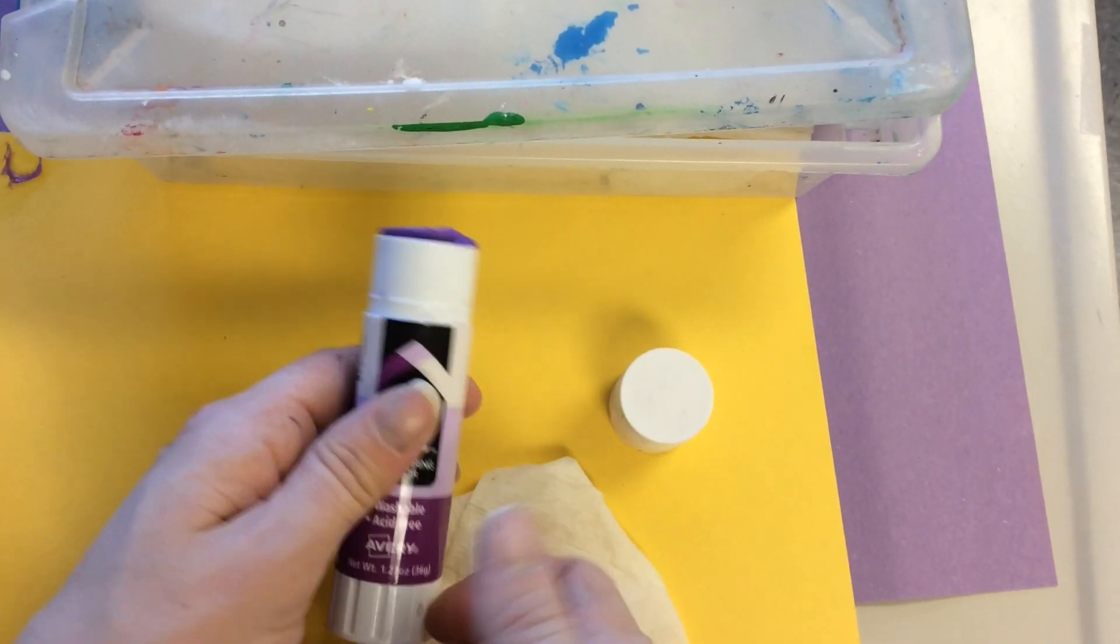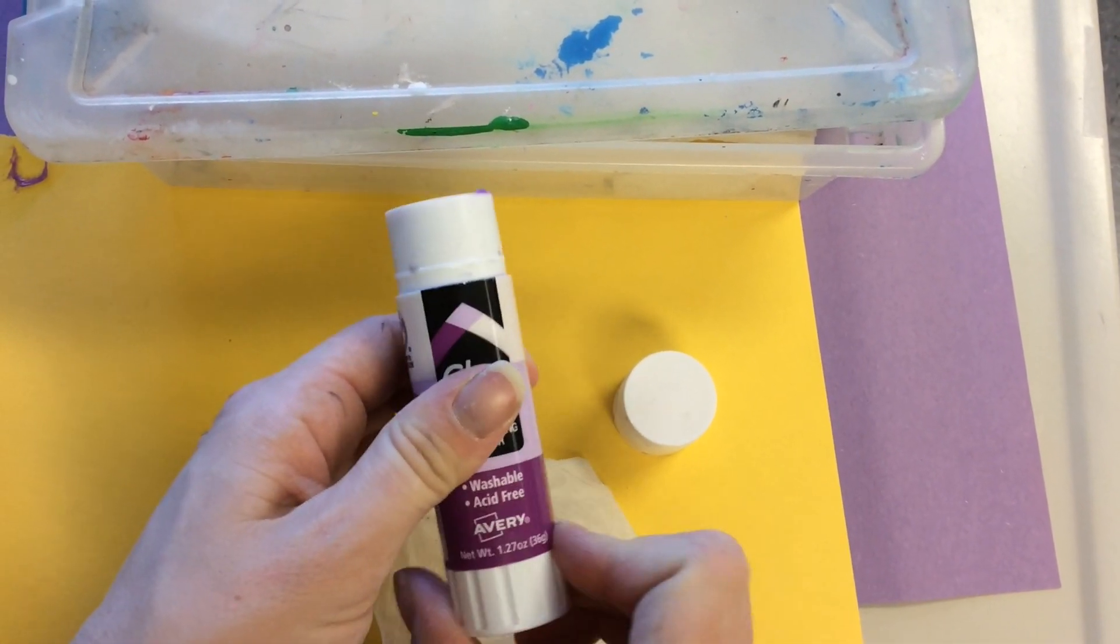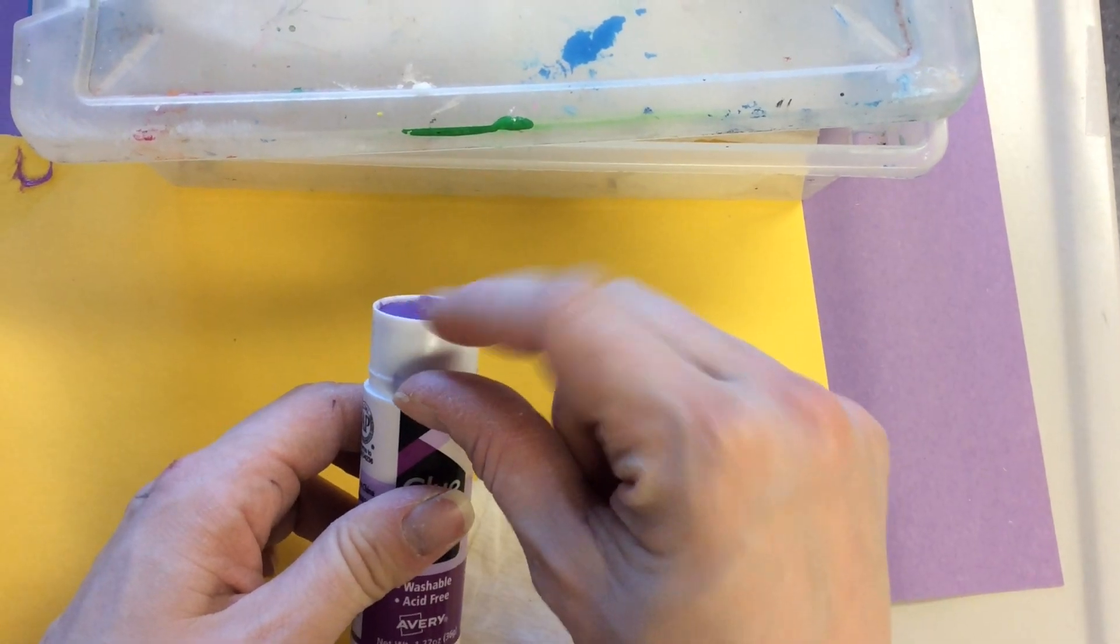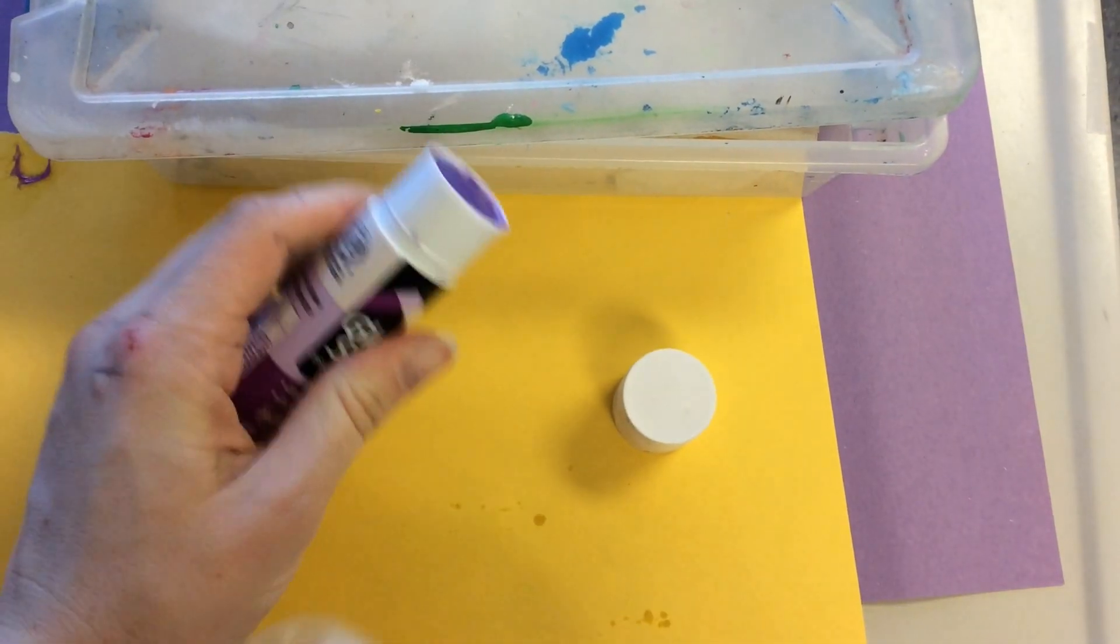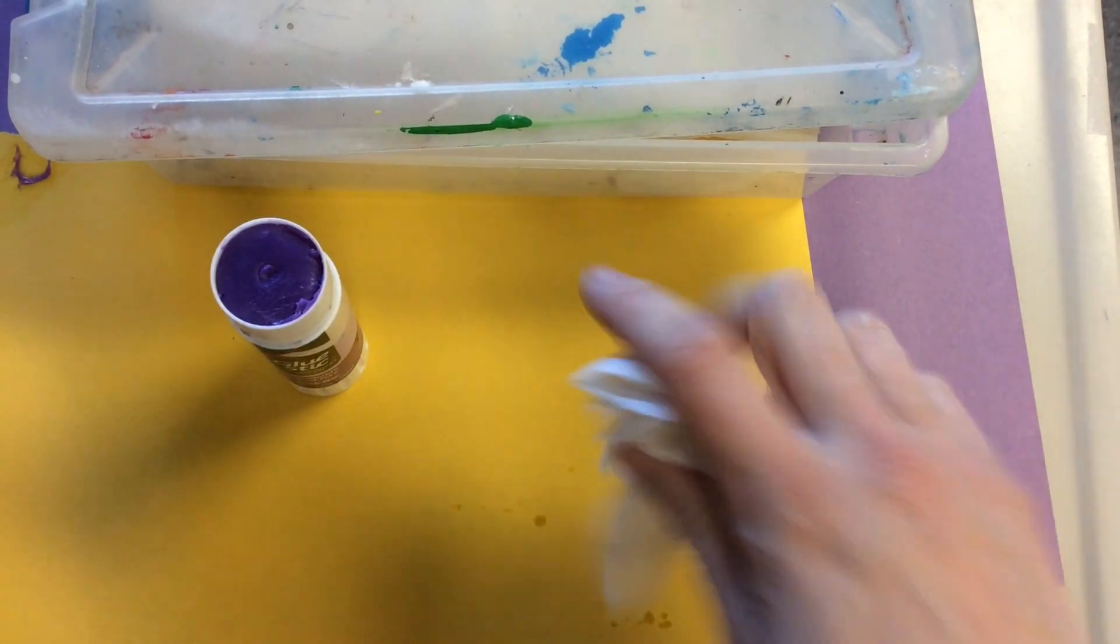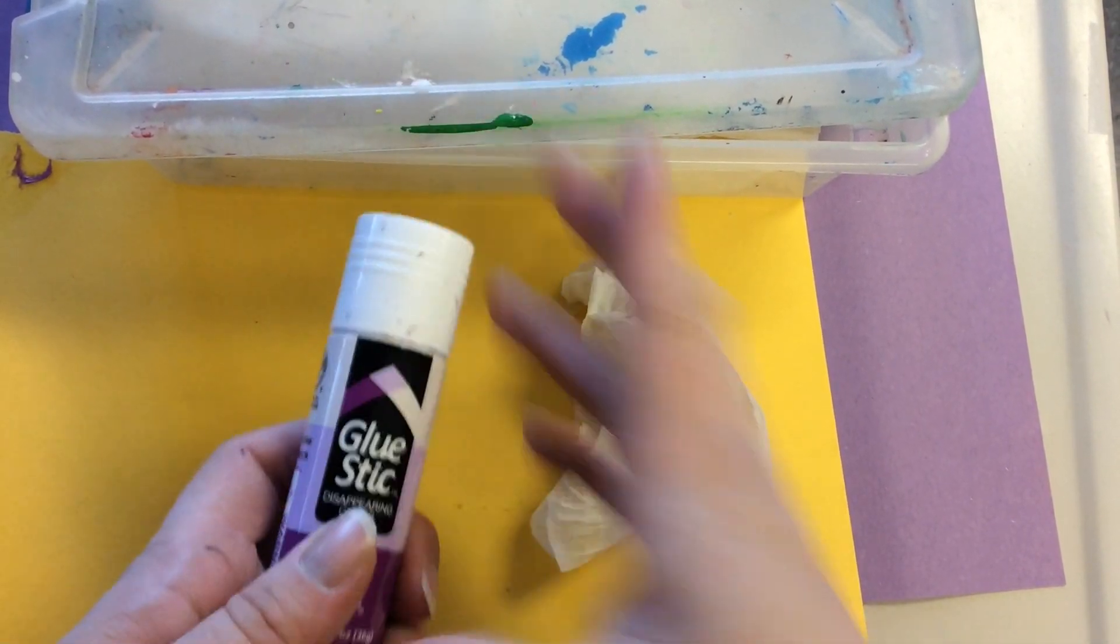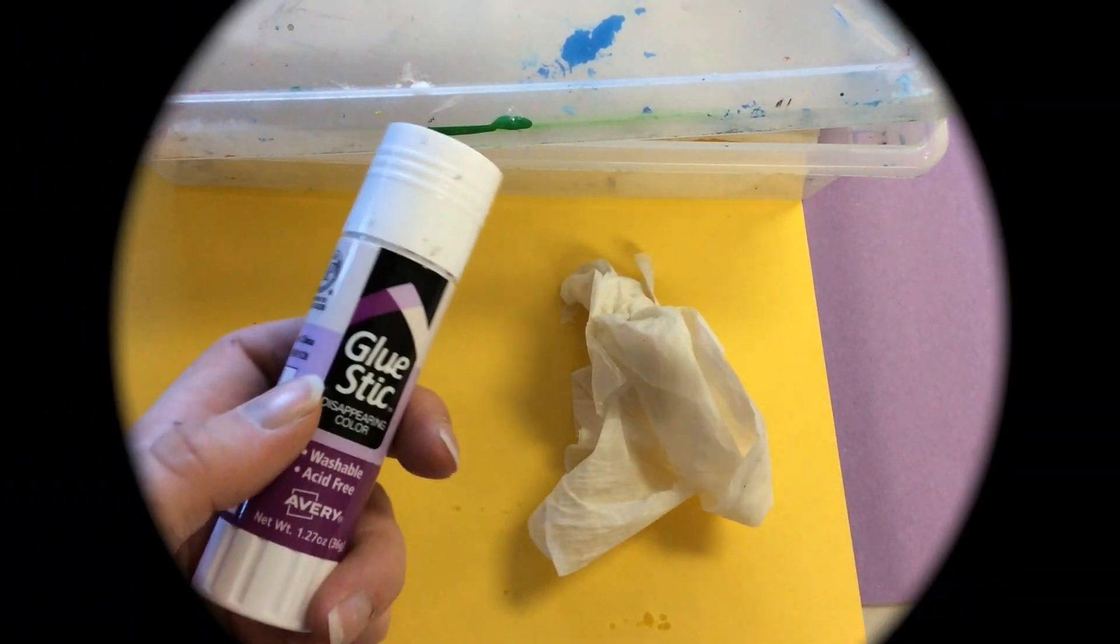When you're putting away your glue please turn it so the glue goes in a little below the rim. And grabbing a wet wipe wipe off the edge. Being a responsible artist so that you can use your tools more easily next time. Bye.